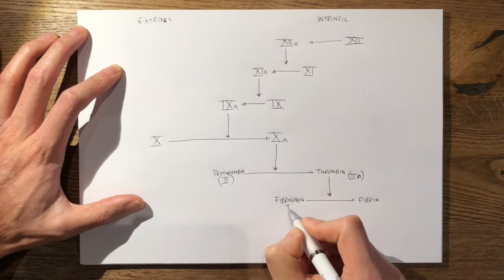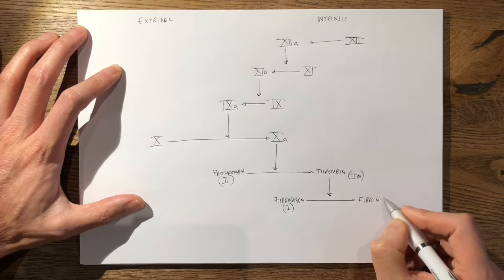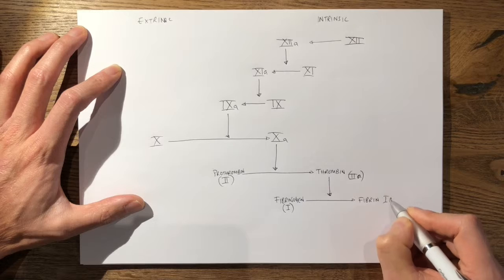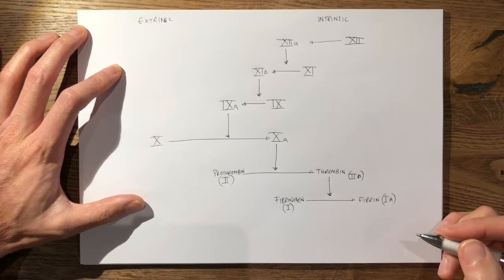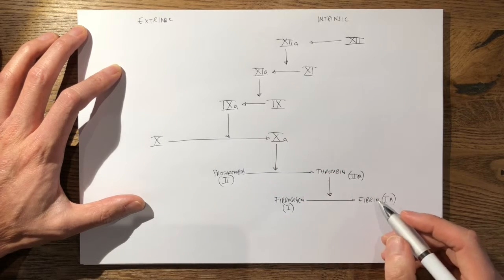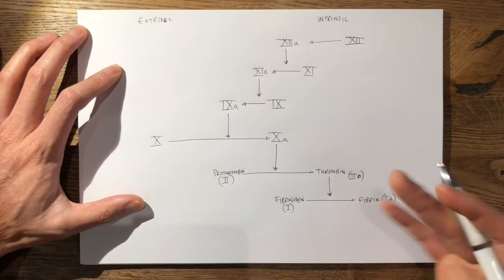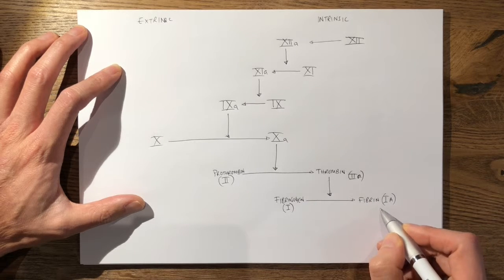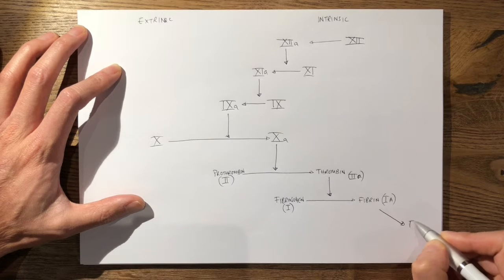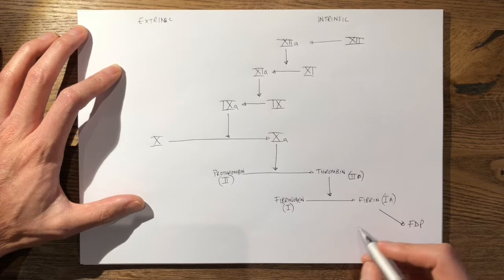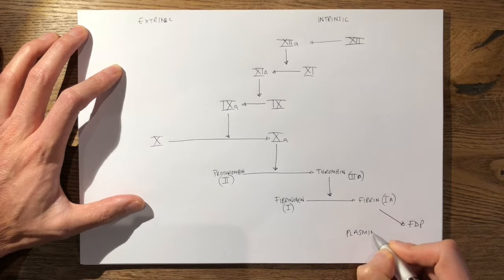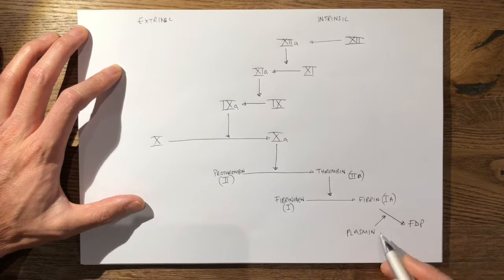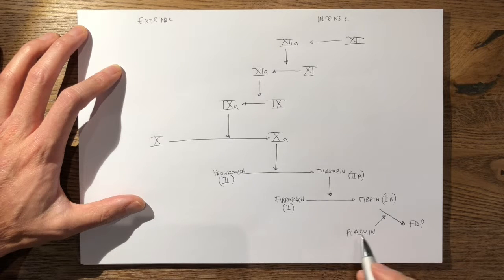Fibrinogen is also known as factor 1 and fibrin is factor 1a. Fibrin is essentially your fibrin clot, and if left alone you have endogenous products which would eventually degrade your fibrin into your fibrin degradation products. You need plasmin for this — plasmin breaks fibrin down into fibrin degradation products, and in turn plasmin comes from plasminogen.